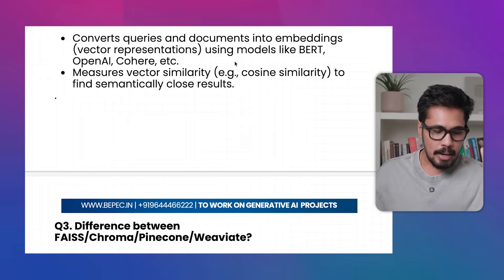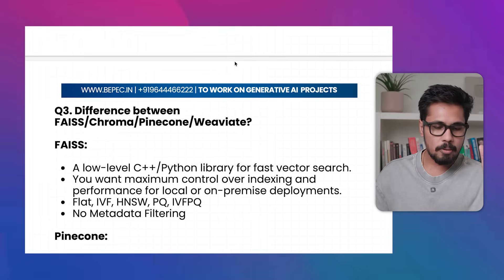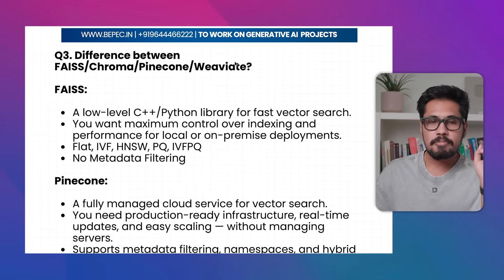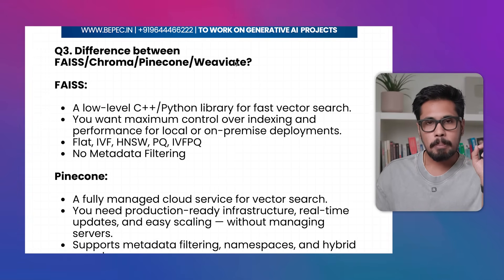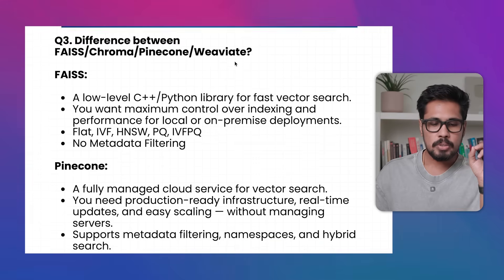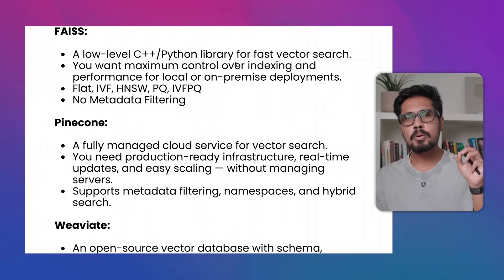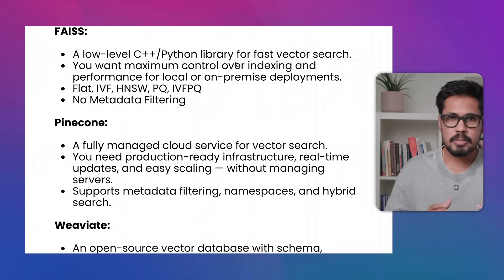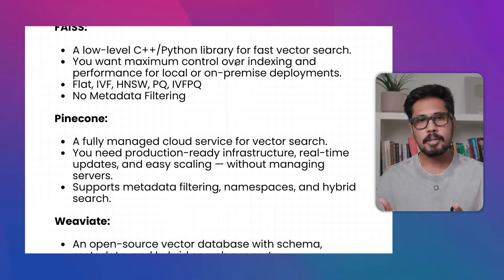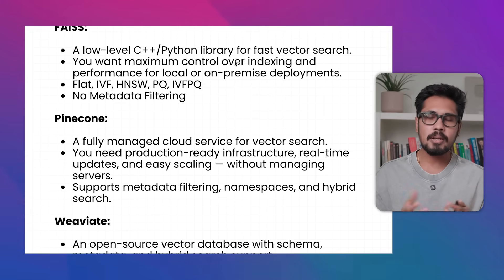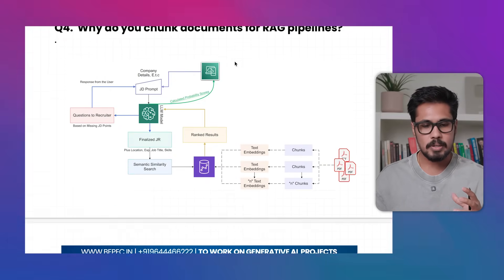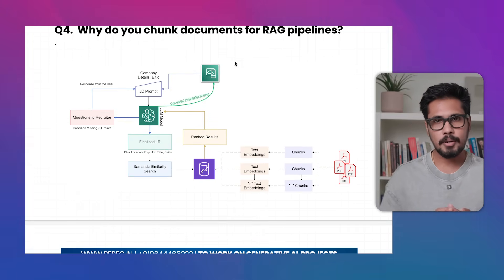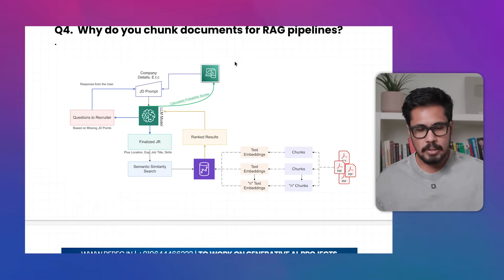The next question covers the difference between FAISS, Chroma, Pinecone, and Weaviate. To understand these concepts, you first need to understand a small concept related to RAG architecture.